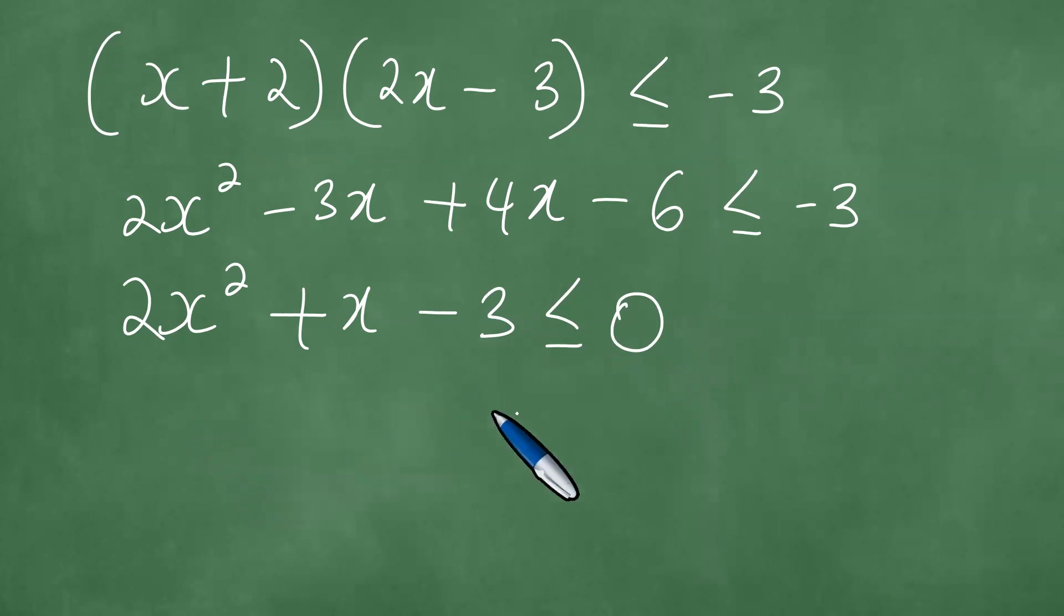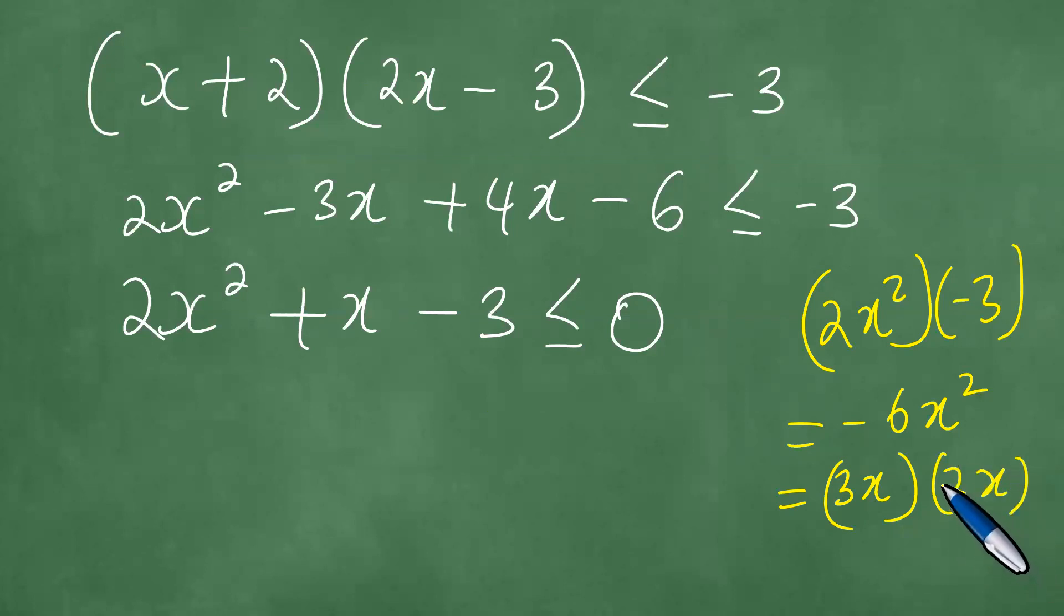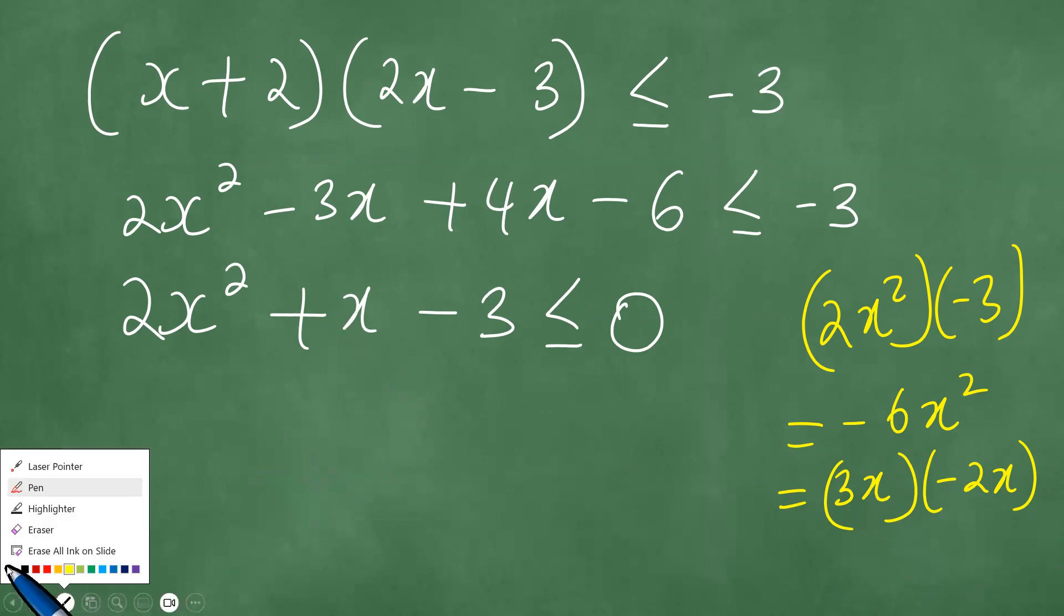Now, to factorize this, we proceed step by step. We note that to get the factors, we multiply 2x² and -3, getting -6x². This means we have a 3x and a -2x, because if you multiply 3x and -2x, you get -6x². But the sum, that is 3x - 2x, gives us +x, and so we are actually good.